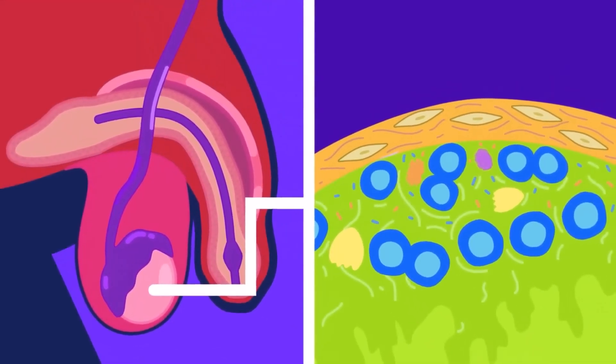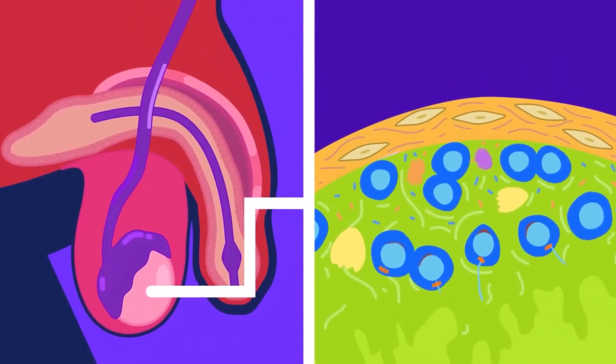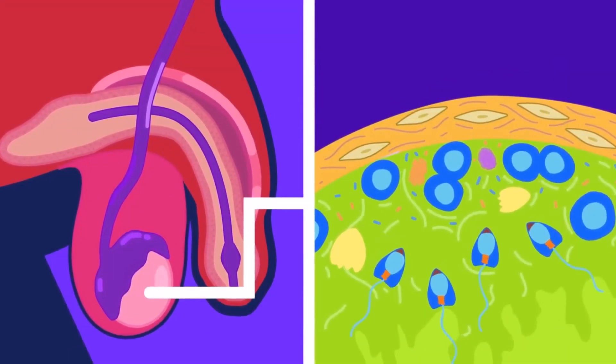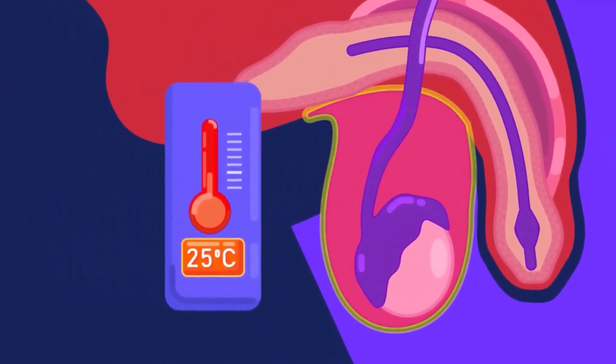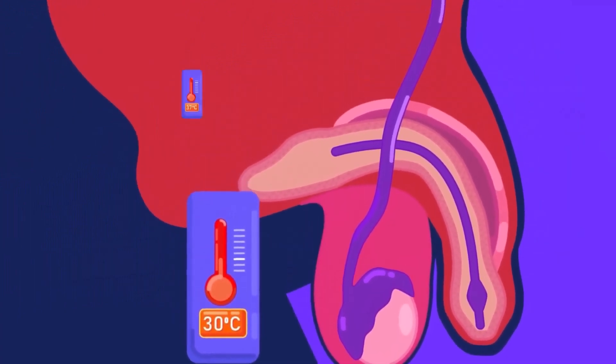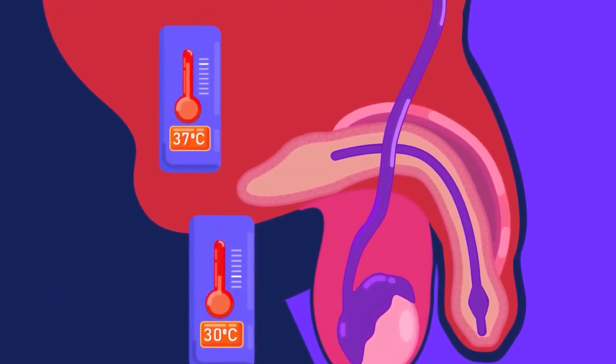The development of the sperms requires a temperature around 1 to 8 degrees less than the body temperature, this means around 30 degrees Celsius. This is why the testes lie in the scrotal sacs outside the main body.